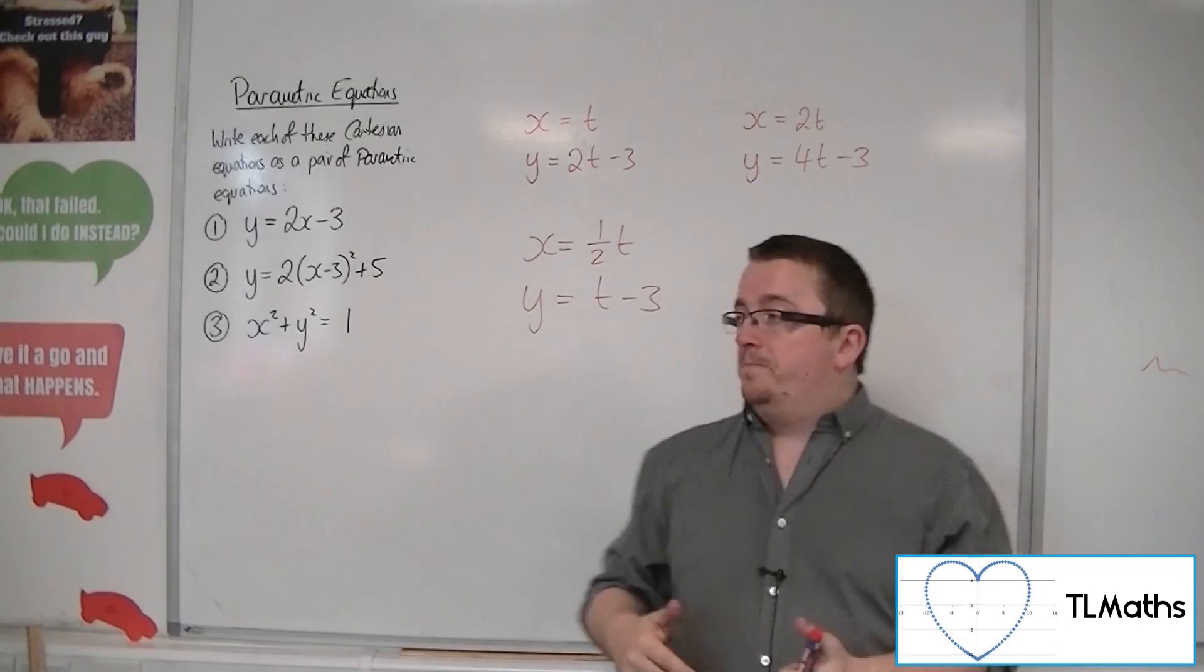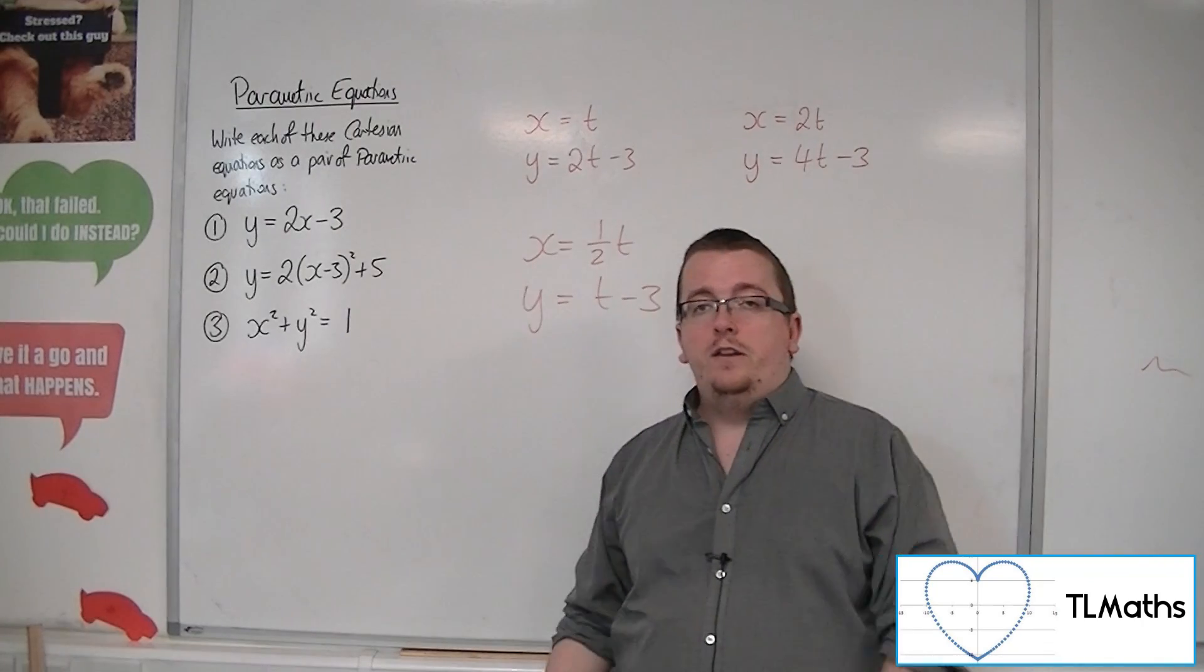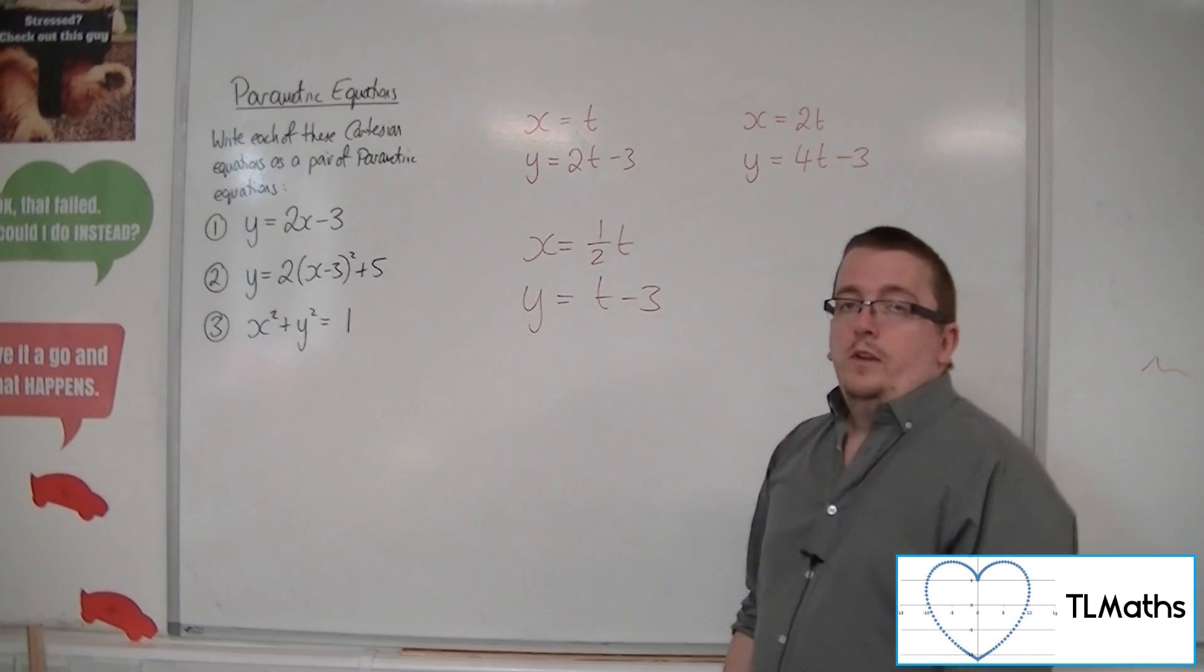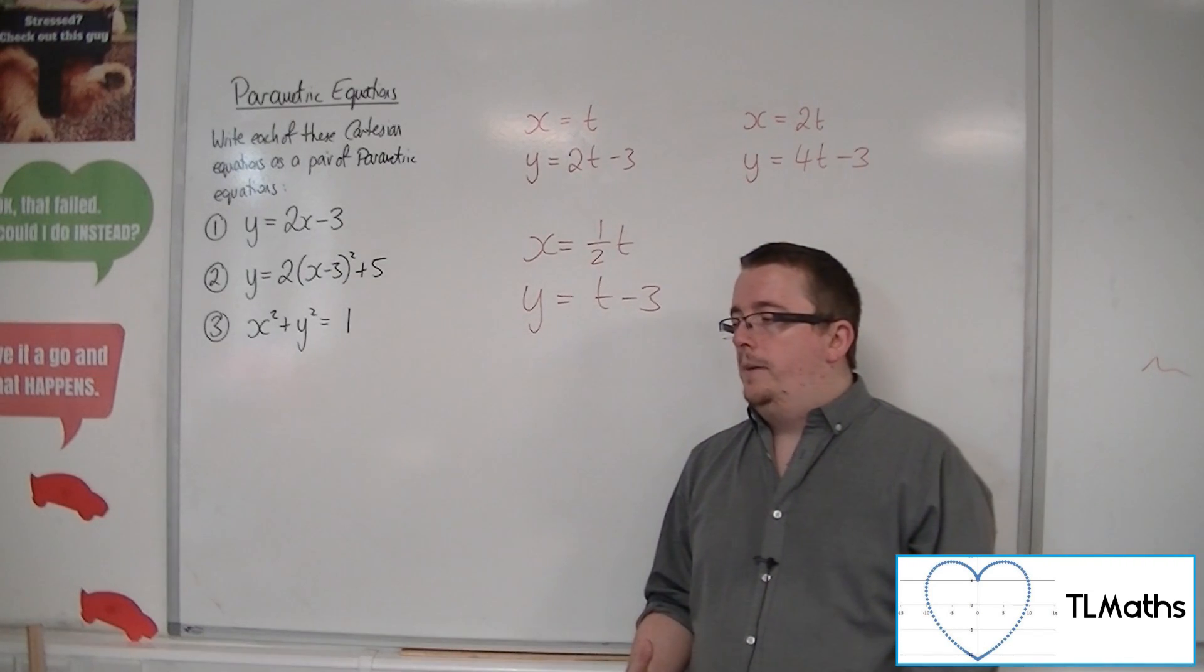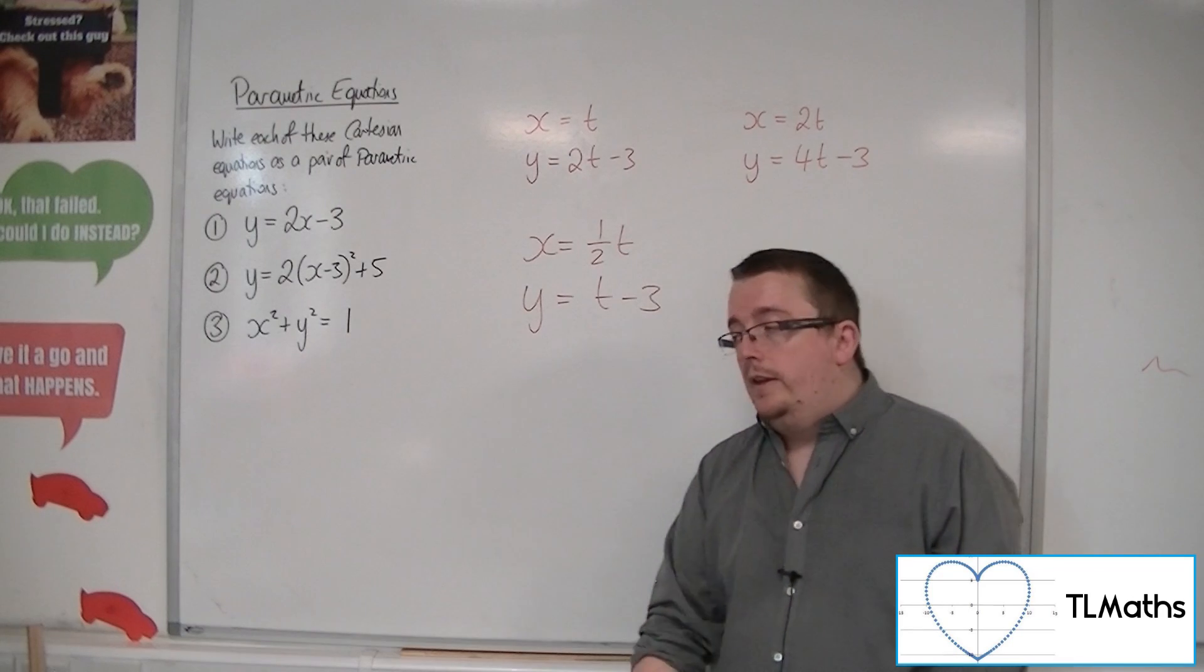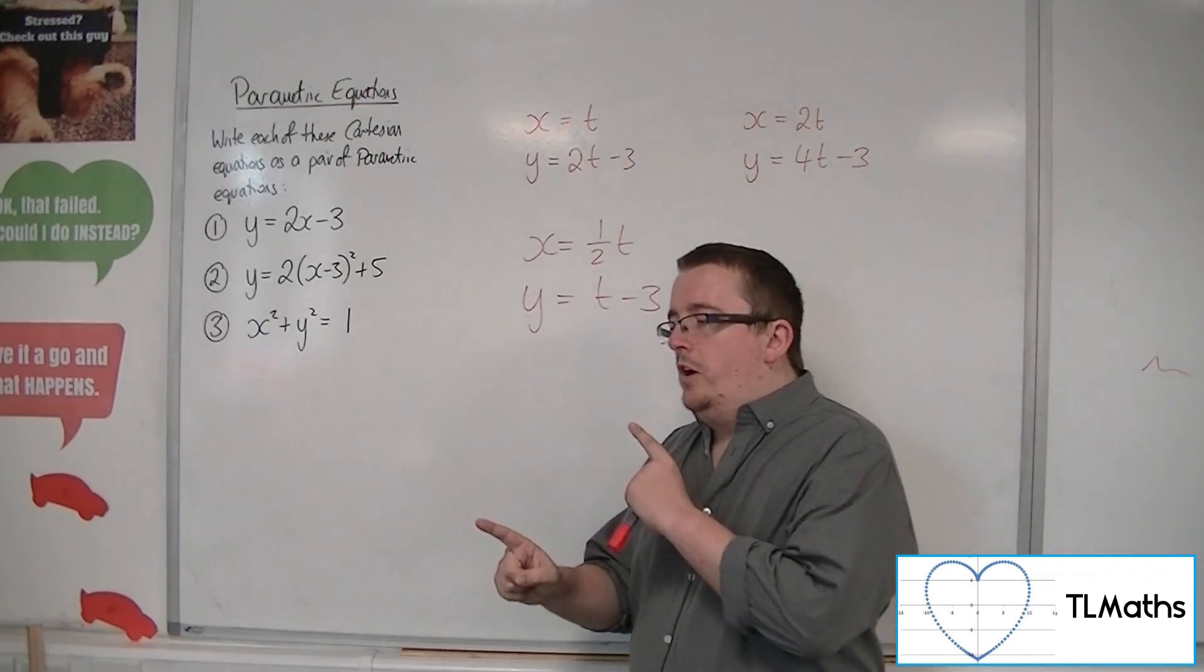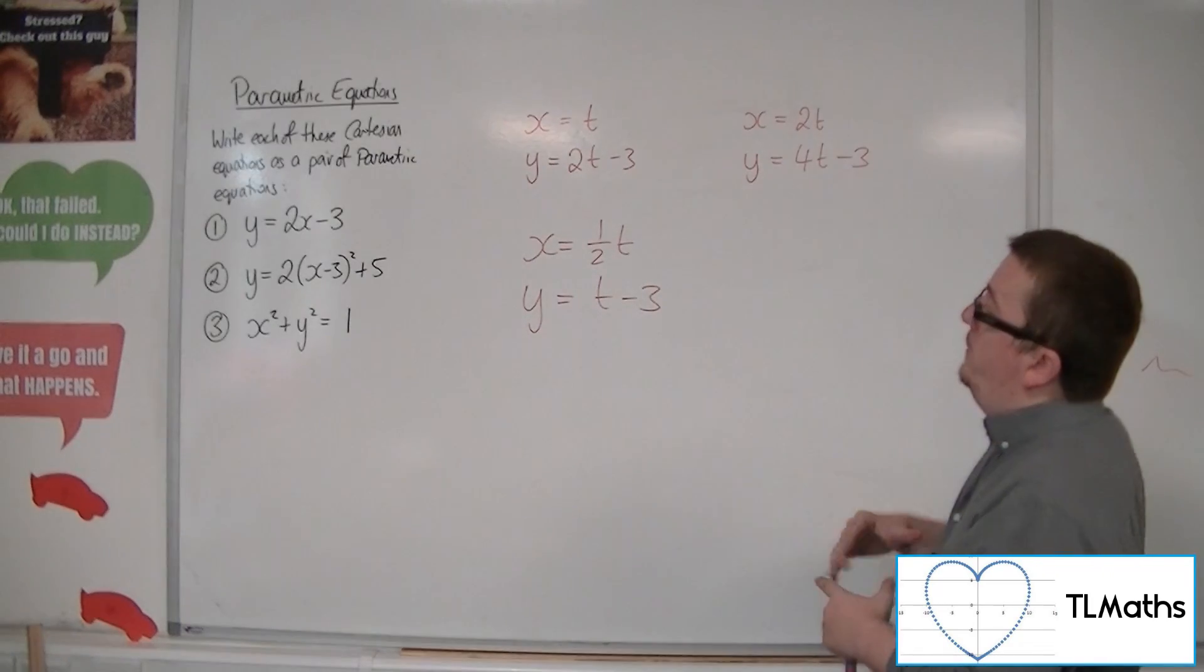And what you'd find is that any of these define exactly the same straight line. Try plotting them on a graph plotter. You should find that there is no difference between any of these. So the same equation that is in Cartesian form can be written in multiple ways in parametric form. Now, what you've got to think about is that although they give the same Cartesian equation, all three of these pairs...